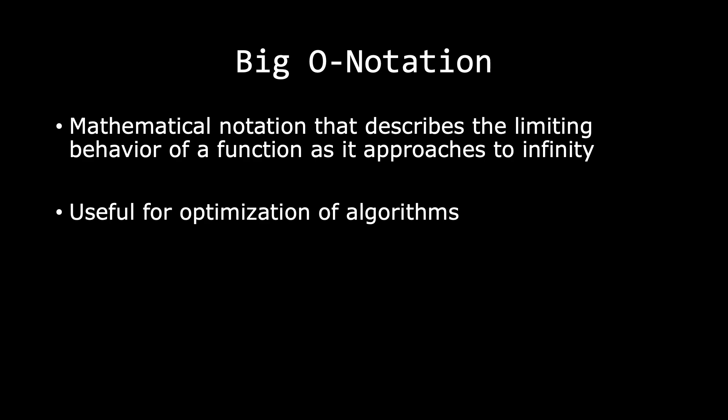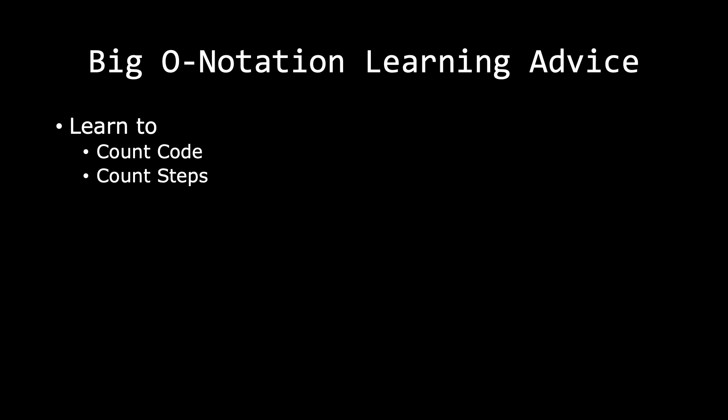Even though Big O notation is outside the scope of this series, since I'm doing a soft intro into data structures and algorithms to improve or optimize any algorithm you build, there is no way of avoiding understanding at least the basics of Big O notation and how it applies to your code. When starting out with learning Big O notation, I recommend learning to count code and count steps. Counting code tells you how many lines need to be written, while counting steps tells you how many lines need to run to complete a specific task. Just understanding how to count code will vastly improve your ability to refactor.